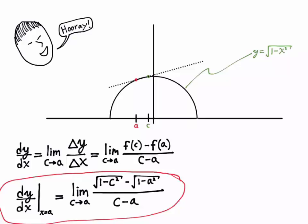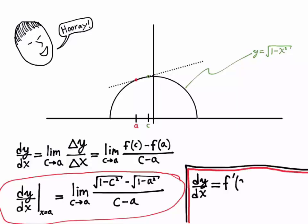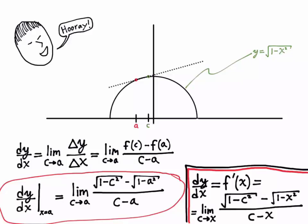To find the derivative, we replace a with x. So the derivative dy/dx equals f prime of x is the limit as c approaches x of square root of 1 minus c squared minus square root of 1 minus x squared, over c minus x. There's a subtle point worth mentioning: some prefer calling that x directly, but that uses x to mean two different things in the same expression. So I always call it a first, then replace a with x to turn it into a derivative function.